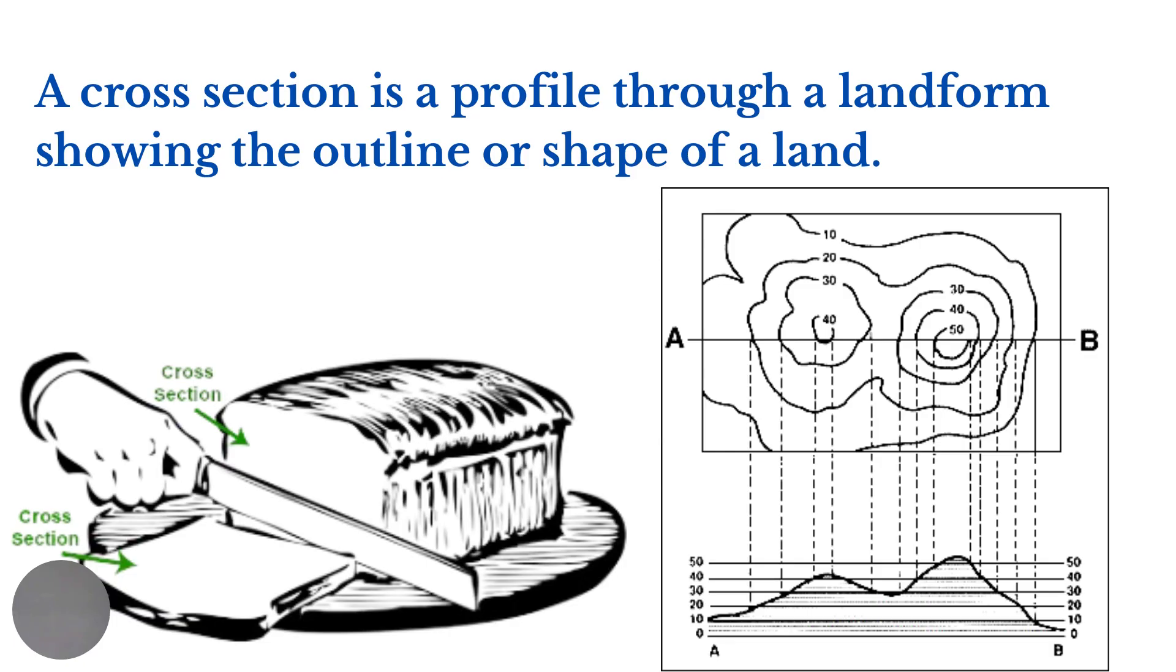So we can say that a cross section is a slice through the landscape. While a map shows an aerial view of the land, the cross section helps us to see more accurately what the landscape looks like from a side view.